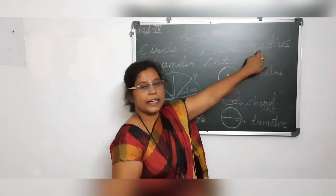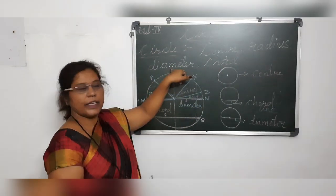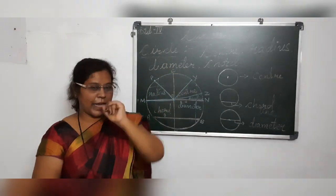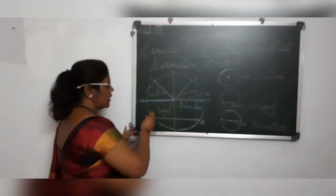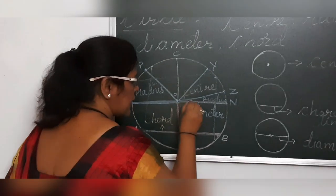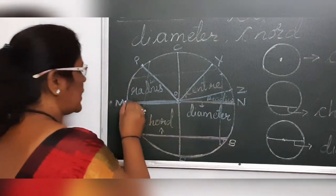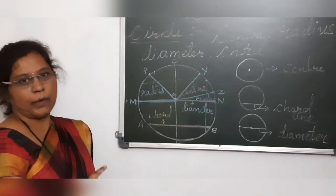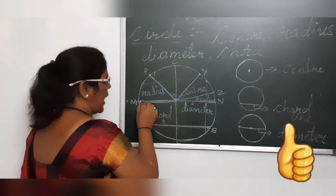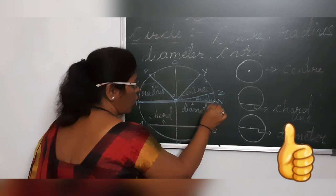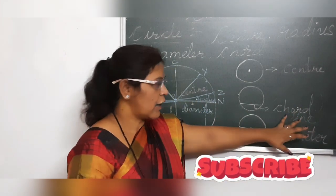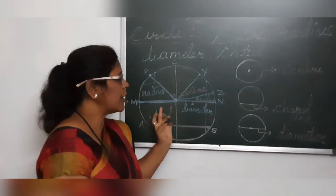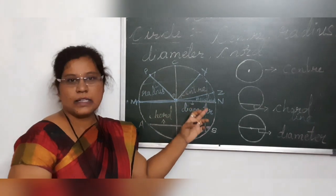Radius is the half of the diameter. And what is diameter? Diameter is always a line which joins and passes through the center of the circle from one point on the circle to another point on the circle. Diameter is the longest chord on the circle. Chord is a line, and diameter is the longest chord.